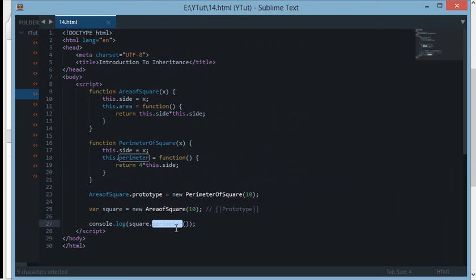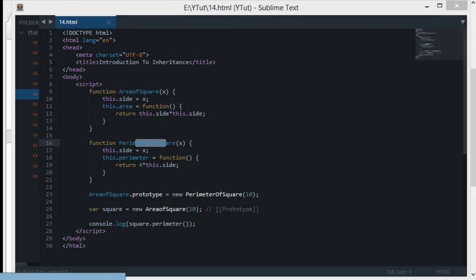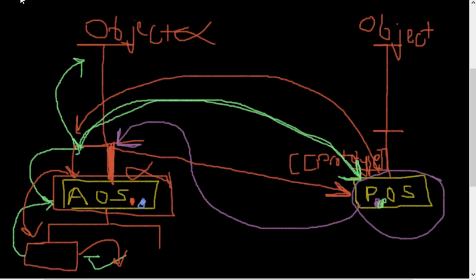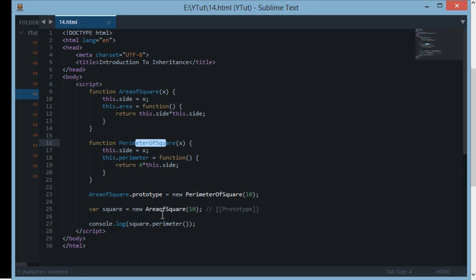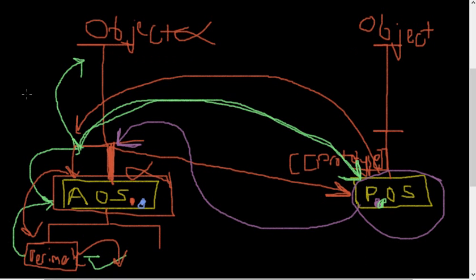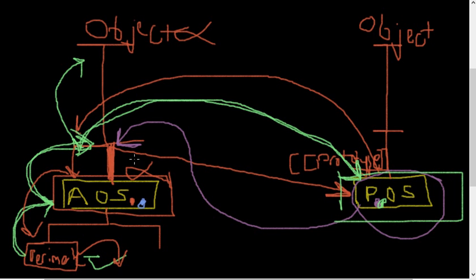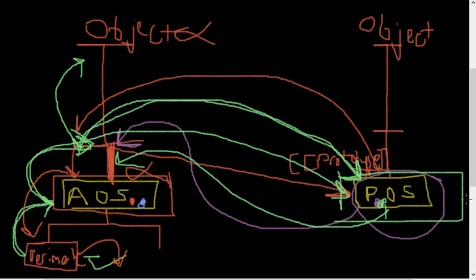But how? We didn't have any method called perimeter in area of square. What's happening here is inheritance — we have inherited the perimeter method from the perimeter of square constructor function into area of square. The square object requested the perimeter method, looked up to area of square which said 'no we don't have this method,' then jumped above the prototype chain, found perimeter of square linked there, requested 'do you have a perimeter method?' — and yes, it returned the method, and the values are used by the object accordingly.